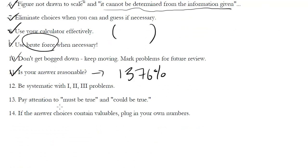Be systematic with 1, 2, 3 problems. These are those roman numeral ones where you have to show like what must be true or could be true. I'll show you some examples of those in the actual problems. But just be careful with those 1, 2, 3's. Treat them systematically.